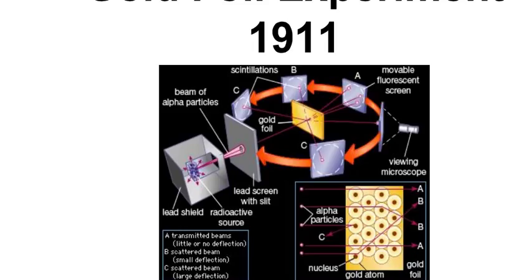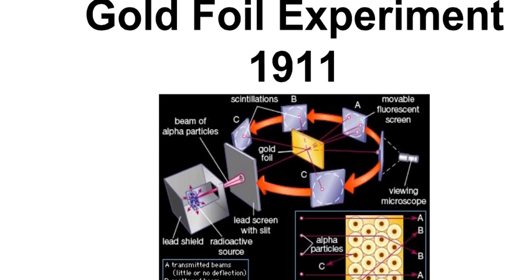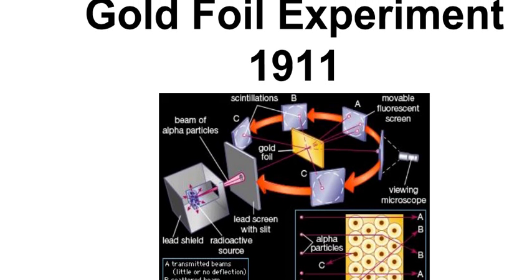He discovered the nucleus in 1911 using an experiment called the Gold Foil Experiment. He shot beams of alpha particles, which are positively charged, through a thin sheet of gold foil. The gold foil is surrounded by a fluorescent screen.